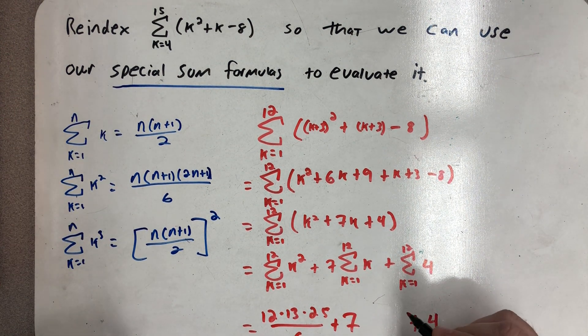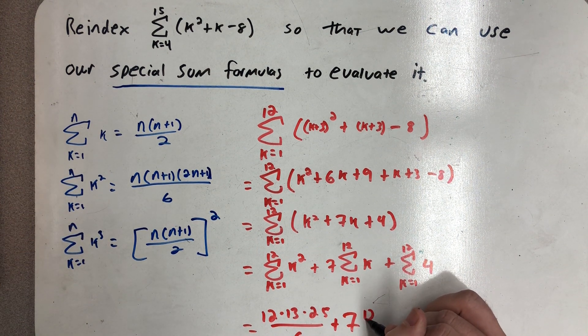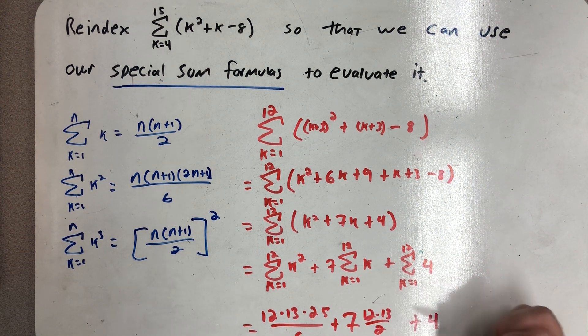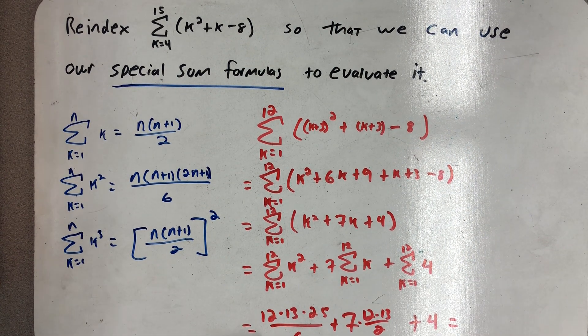And then plus 7 times the sum of the first 12 whole numbers. So I get to use this formula. I have 12 times 13 all over 2, and now I just need to do that sum.